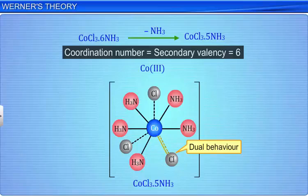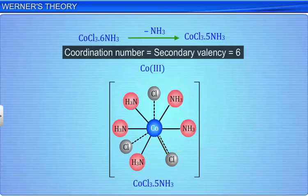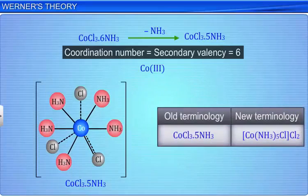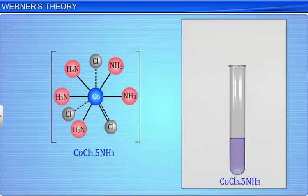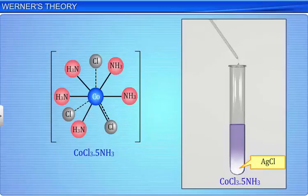In modern terms, the complex can be written as [Co(NH3)5Cl]Cl2. Thus, only 2 of the 3 chloride ions are ionic and only 2 are precipitated as silver chloride with silver nitrate. On ionization, this complex will give 3 ions: 1 [Co(NH3)5Cl]2+ ion and 2 chloride ions.